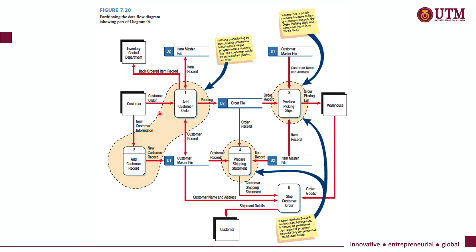Let us look at the figure in detail. As you can see here, this is a diagram zero — a part of a diagram zero of a system. We can see that there are five processes involved: Process 1, add customer order; Process 2, add customer record; Process 3, produce picking slips; Process 4, prepare shipping statement; and Process 5, ship customer order.